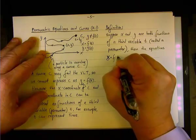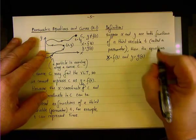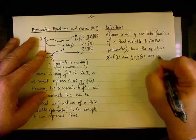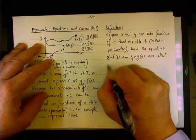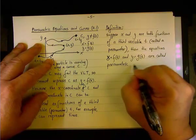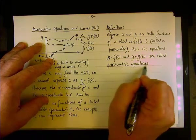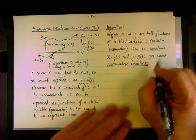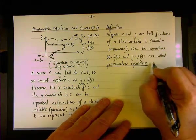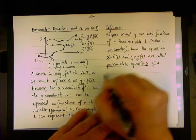Then the equations—x first, x equals f of t, and y equals g of t—are called parametric equations.